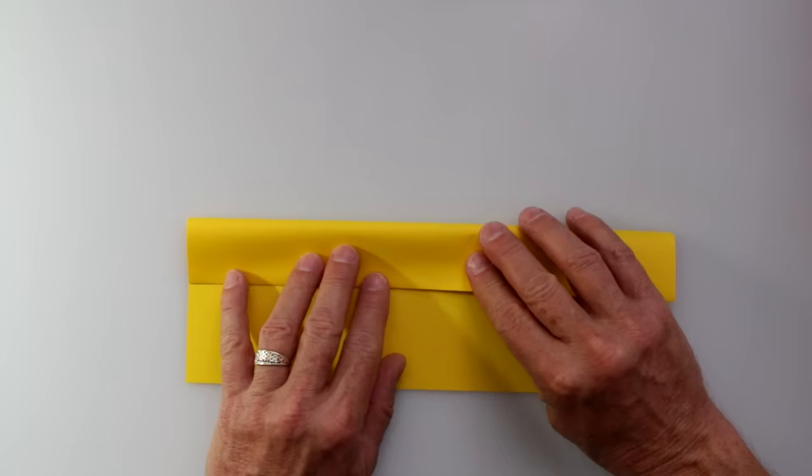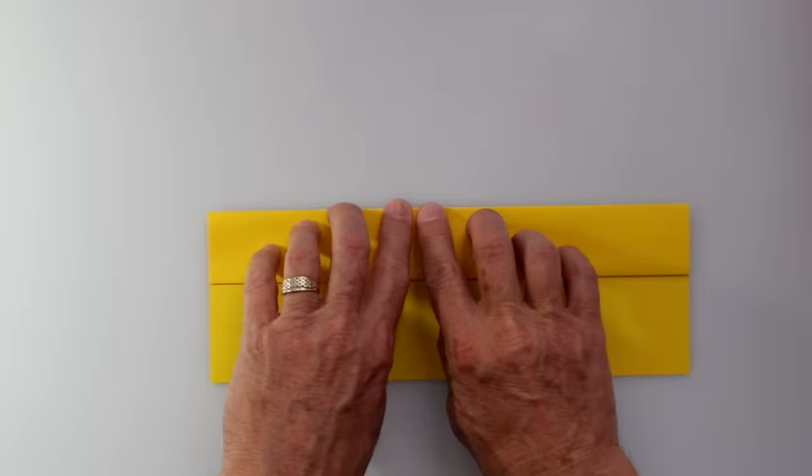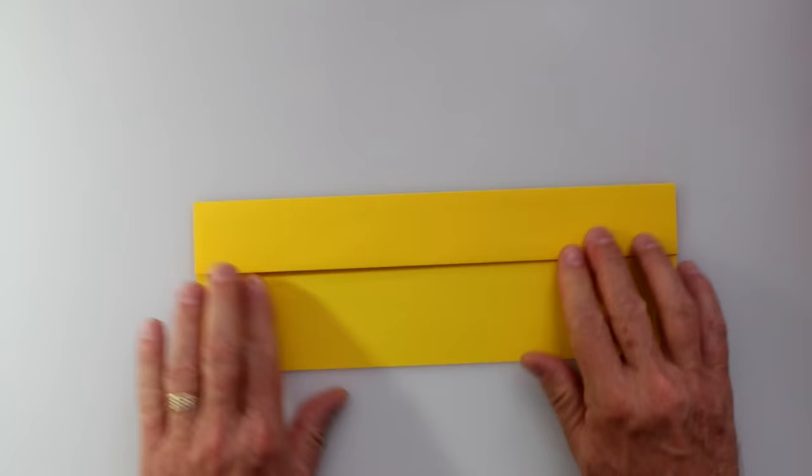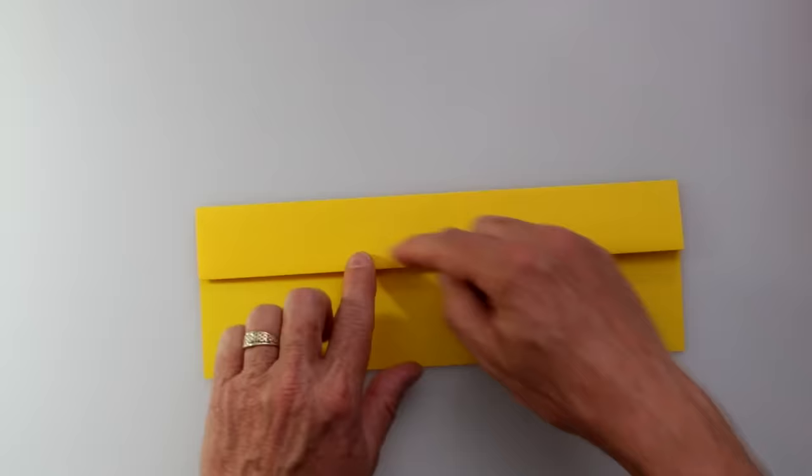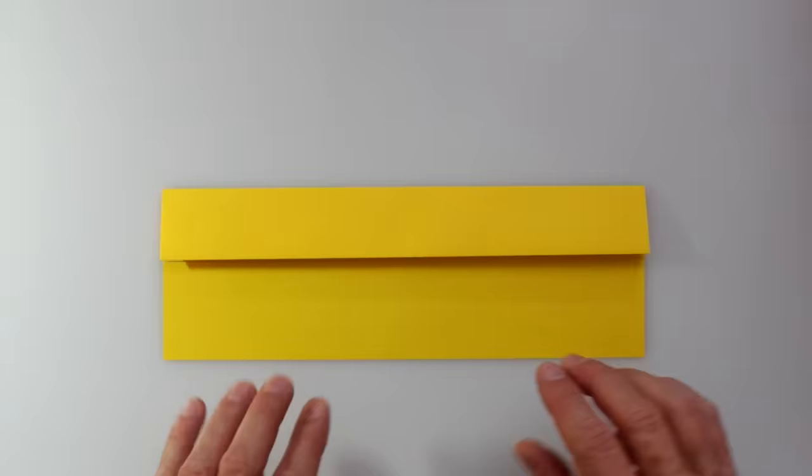Now we're going to fold the layered part in half, bringing the top down to what used to be the top edge of the paper. Make a nice sharp crease, again starting in the center and working our way out. And one more time we're going to fold the layered part in half. If you started with anything thicker than 20 pound paper, your fingers are going to get a real workout on this one. So let's roll that over one more time, folding the layered part in half.